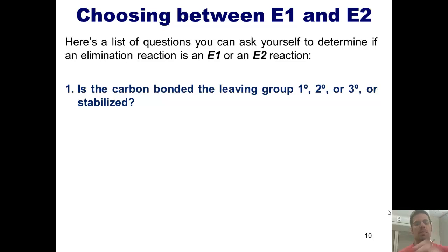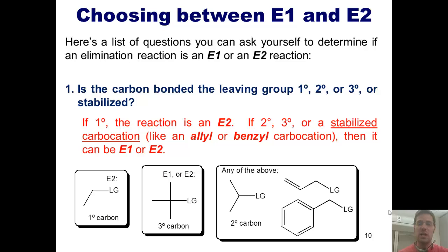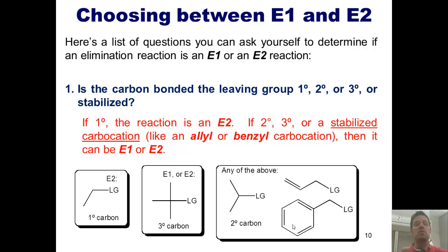Question one: is the carbon bonded to my leaving group primary, secondary, tertiary, or stabilized? If it's primary, then the reaction is E2 — end of discussion. If it's secondary, tertiary, or a stabilized carbocation such as an allyl or benzyl carbocation, then it could be either E1 or E2. This is summarized in the following figure: a leaving group on a primary carbon can only be E2 under elimination conditions; on secondary, tertiary, or stabilized carbocation, it could be any of the above.